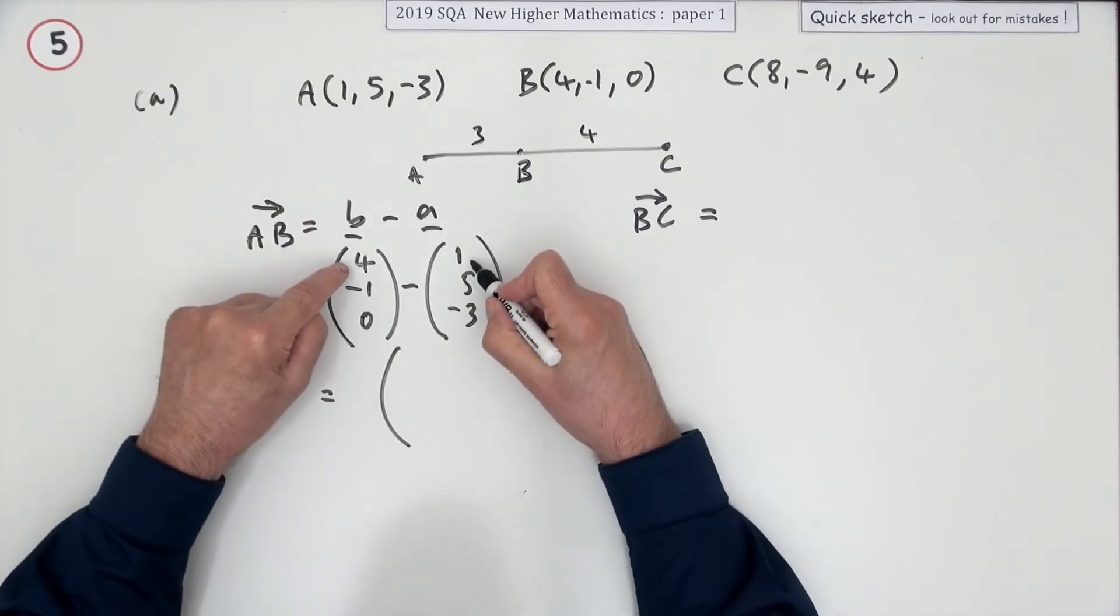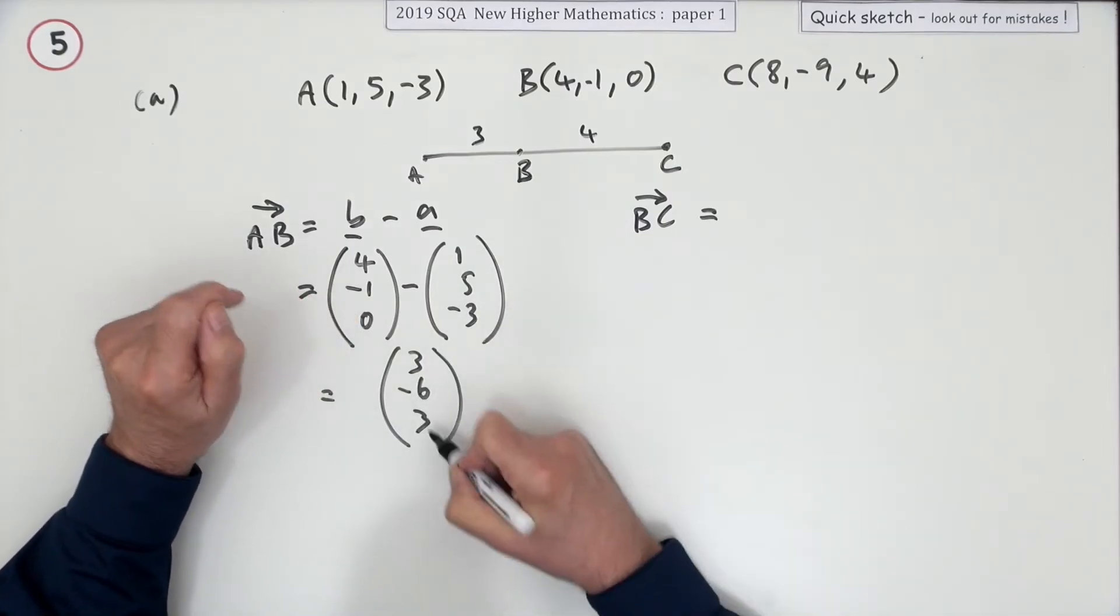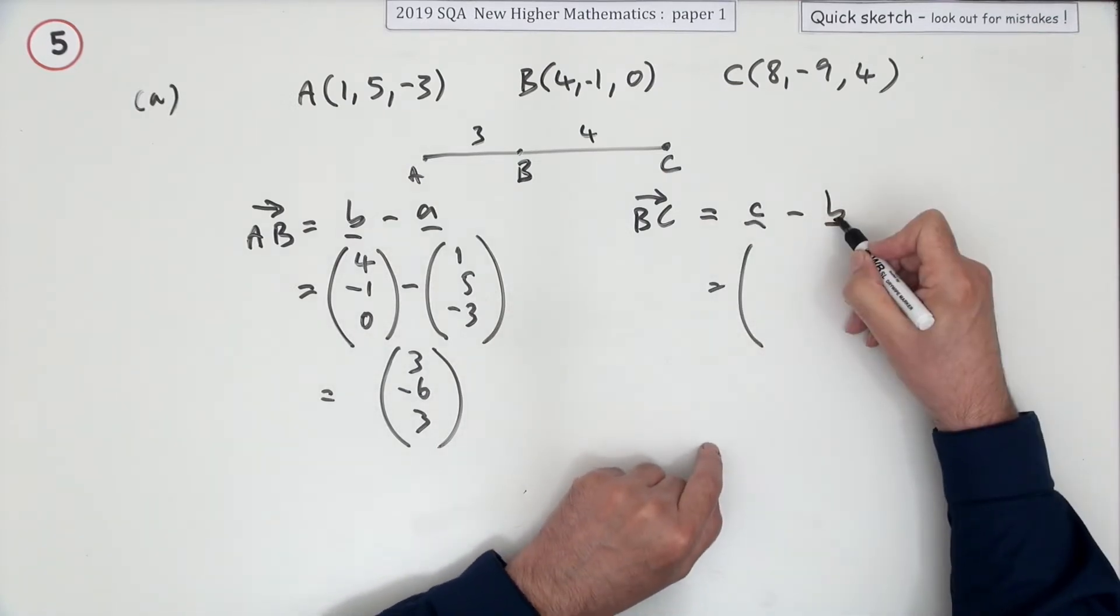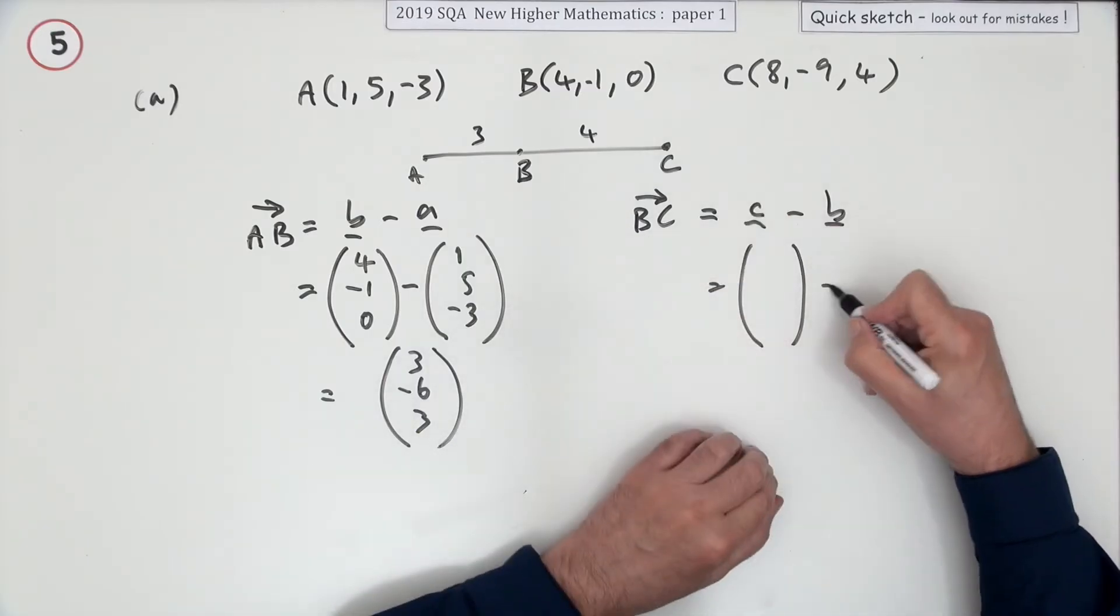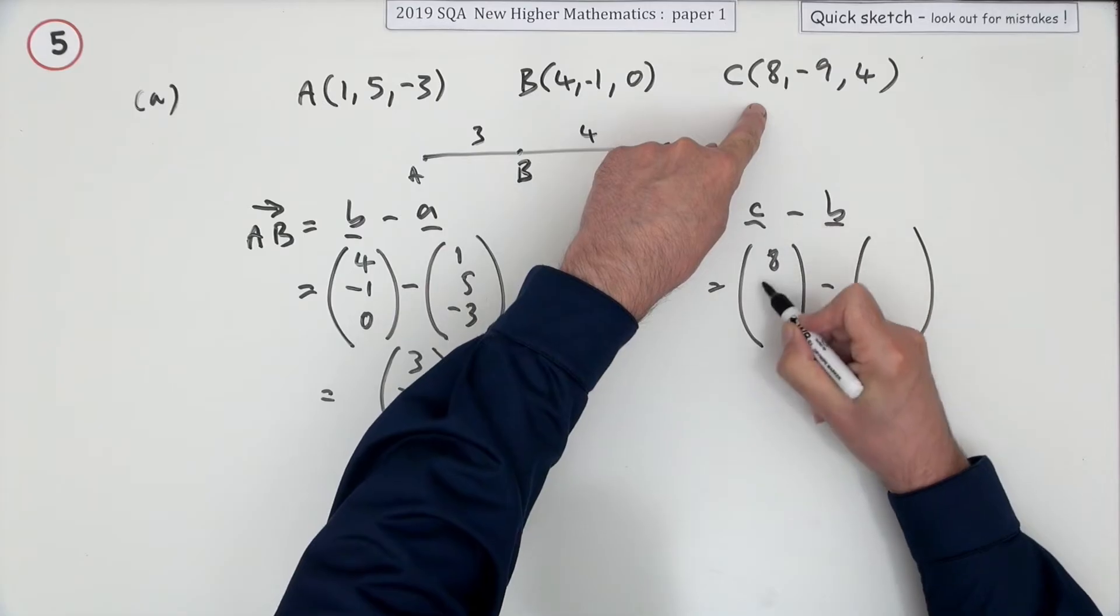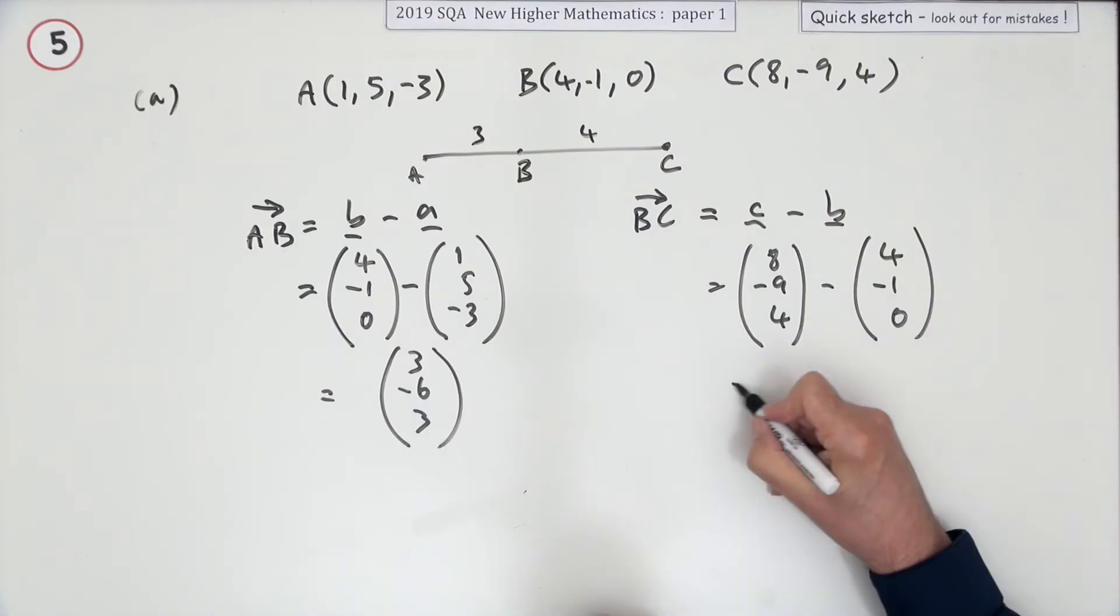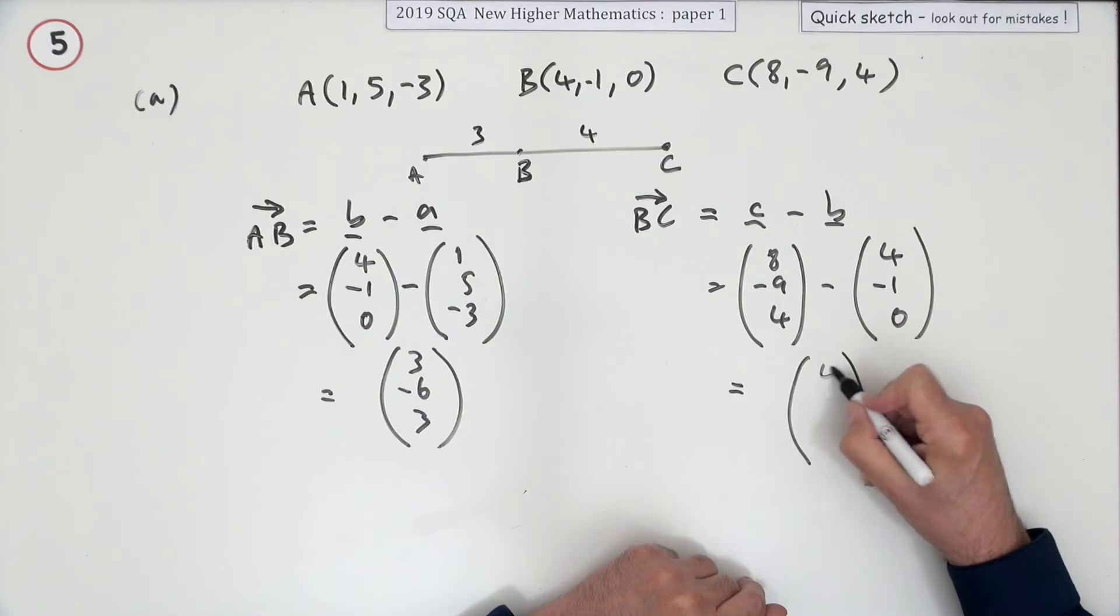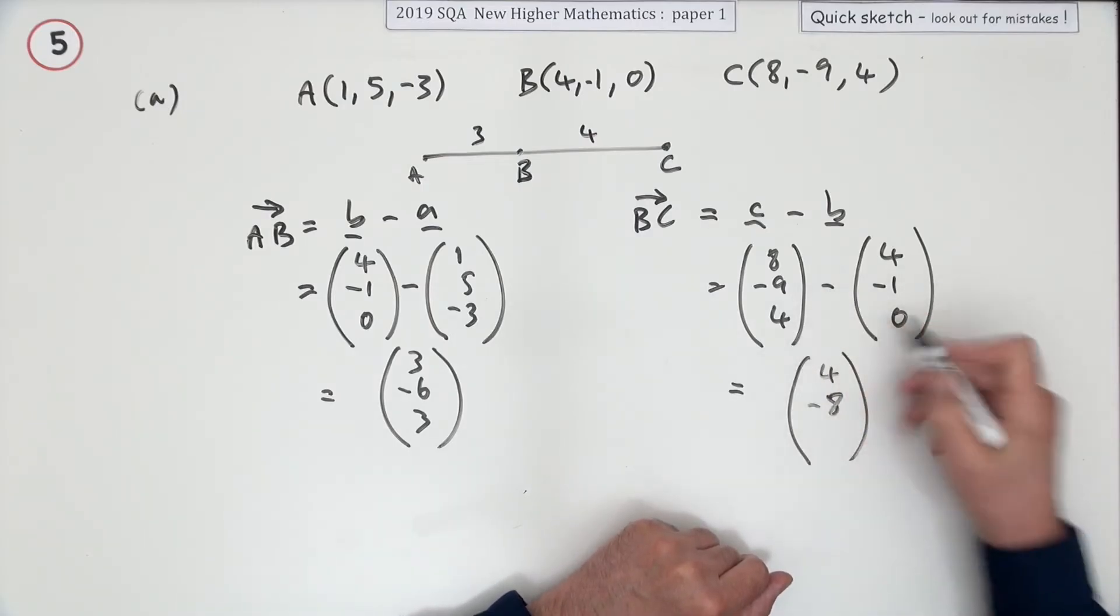B to C, that'll be C minus B in terms of the position vectors. C is eight, negative nine, four. B is four, negative one, zero. So to get from B to C: eight take away four, there's four steps forward. Negative nine plus one, that's negative eight. Four take away zero is four.